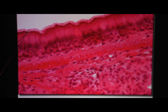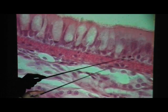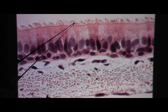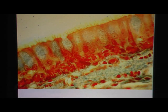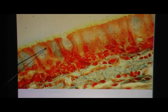Looking at additional views of the same tissue at various magnifications: ciliated pseudo-stratified columnar epithelium. In one picture you can see some clear goblet cells. And that's it.